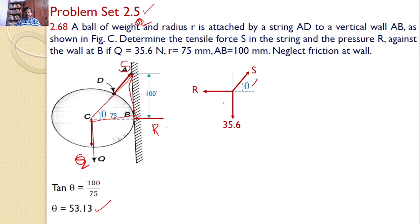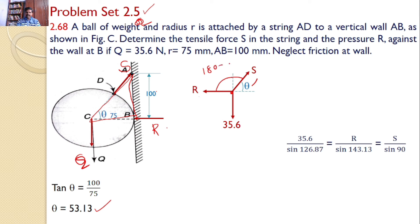Now there are three forces and all three forces are meeting at a particular point and all are divergent, so I can apply the sine rule. According to the sine rule: 35.6 divided by sine of the angle between these two forces — which is 180 minus theta, that is 180 minus 53.13, giving 126.87 — equals the reaction at B, R, divided by sine of the angle between these two forces, which is 90 plus 53.13 giving 143.13, equals S divided by sine of the angle between these two forces, which is 90. Hence it is S divided by sine 90.